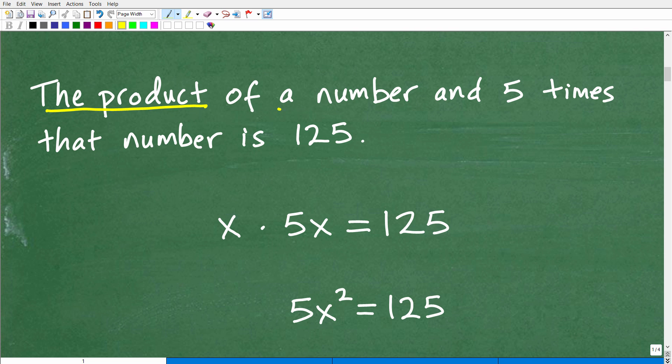Well, what are we multiplying? Well, the product of a number. Okay, well, we're multiplying a number. So what is a number in algebra? How can I represent this mathematically speaking? Well, we can use a variable, right? Things like X, Y, Z.